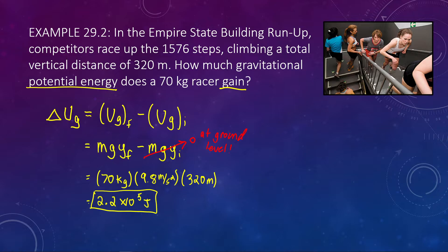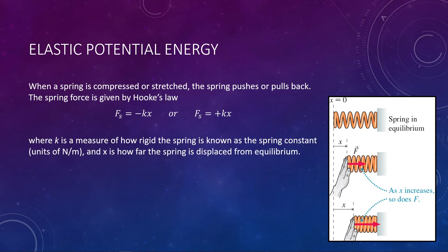That sounds like a lot, and it is. But think about how tired you would be after walking up the entire Empire State Building — you are changing your energy by a lot because you're raising yourself up by a significant distance. So it makes sense that we have a pretty large value. That's our second of four major types of energy. Let's now move on to the third: elastic potential energy.